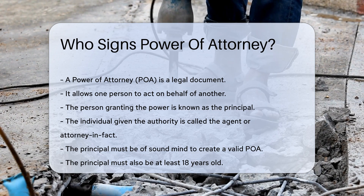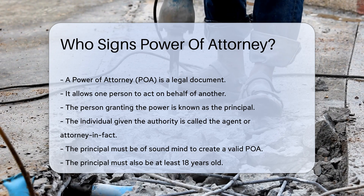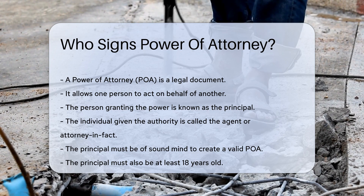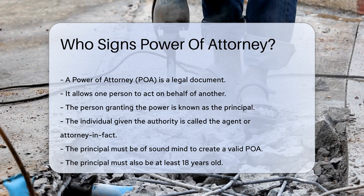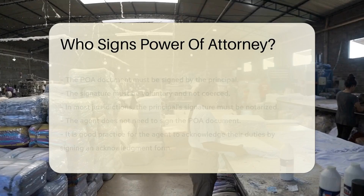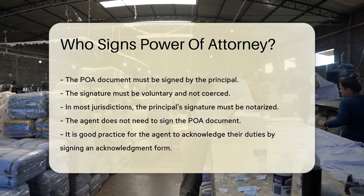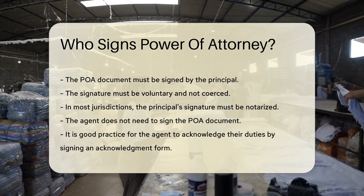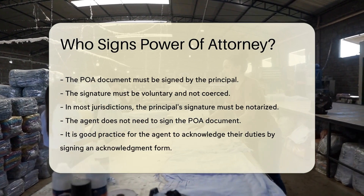To create a valid POA, specific steps must be followed. First, the principal must be of sound mind — this means they must understand the powers they are granting. The principal must also be at least 18 years old. The POA document must be signed by the principal.